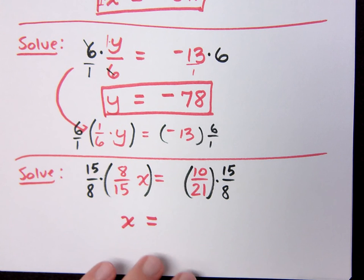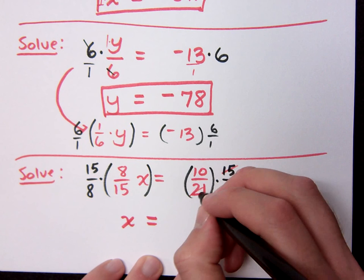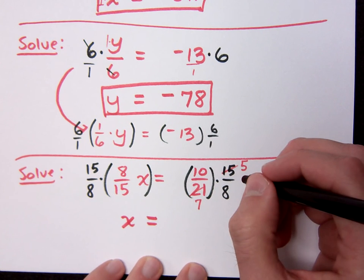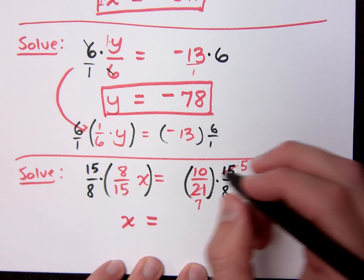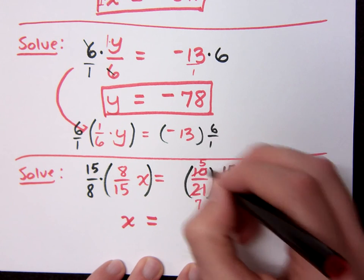21 and 15 have a common factor of? So 3 goes in here. 7 and 5. Anything else that has common factors? 8 and 10. 8 and 10 have a common factor of 2. So I get? 5 and 4. Oh, I got 5 and 5.